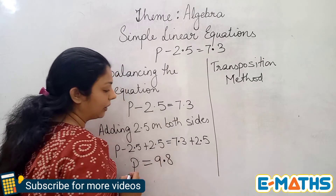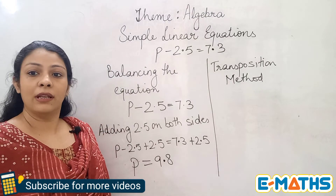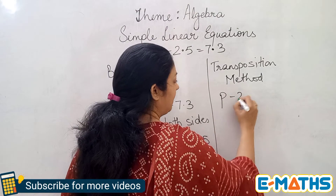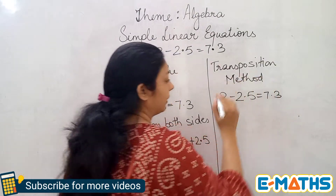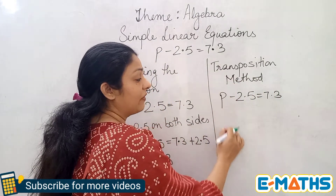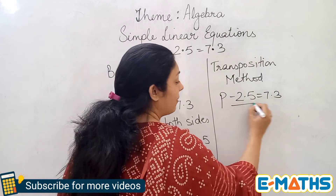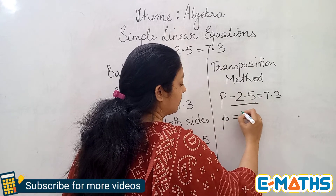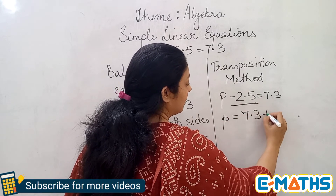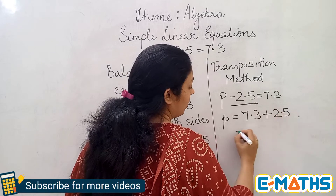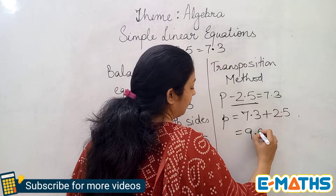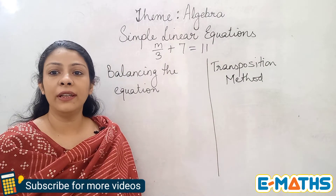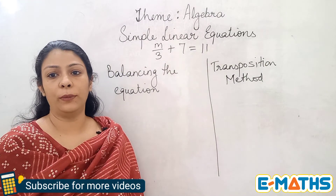Now the same question P minus 2.5 equals 7.3 solved by transposition. I transpose the minus 2.5 to the right hand side, changing its sign. So it becomes plus 2.5 on the right, giving P equals 7.3 plus 2.5, which is 9.8. We get the same value for P with both methods.